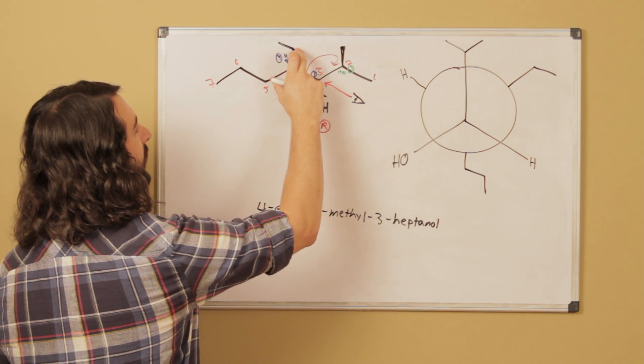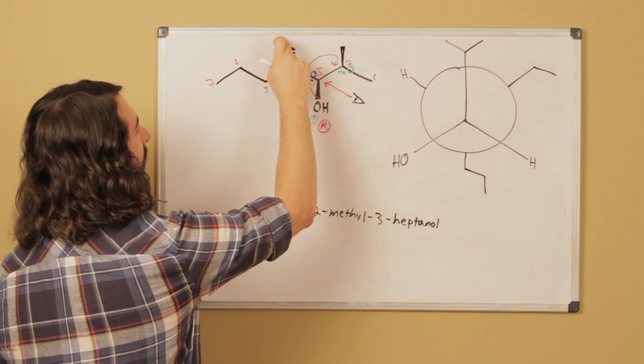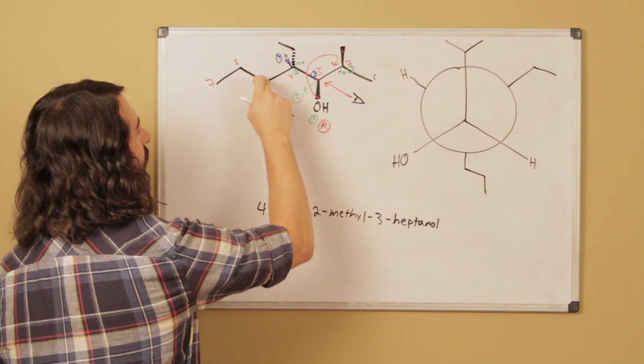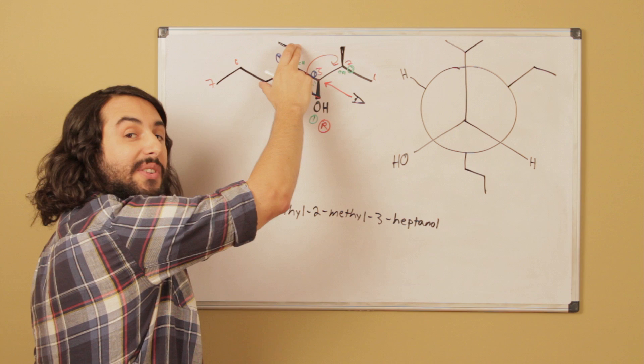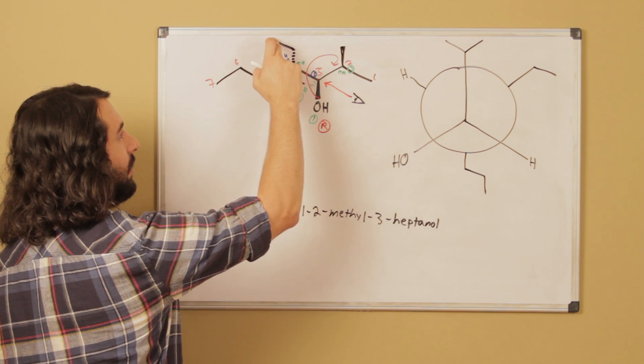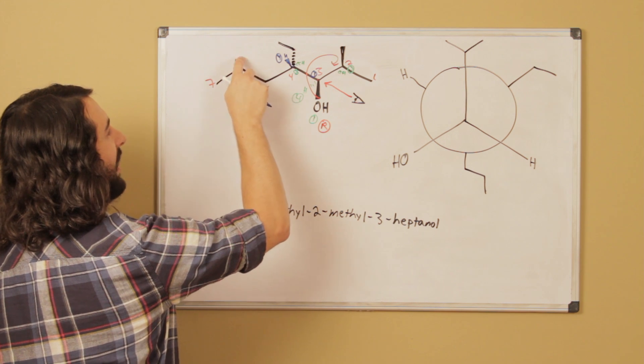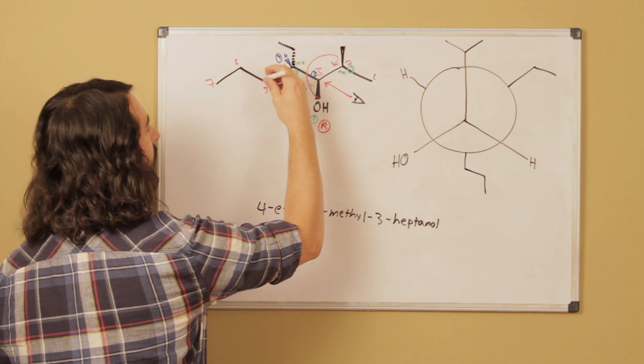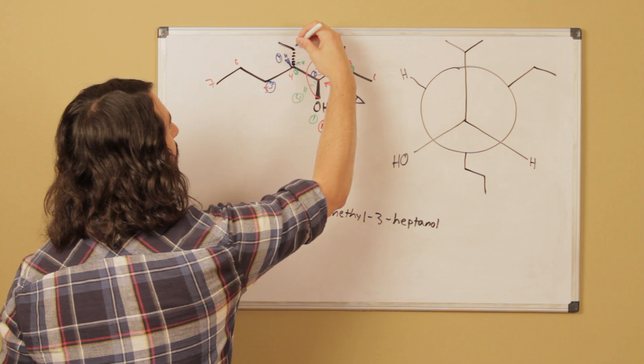Now we look at these two carbons. This is attached to hydrogen, hydrogen, carbon. This is attached to hydrogen, hydrogen, carbon. So again, these two positions tie. Now we're over here. Now this carbon is attached to hydrogen, hydrogen, hydrogen. This one is attached to hydrogen, hydrogen, carbon. So this one actually ends up winning. That's going to be number 3. No, sorry, number 2. And then this one is going to be number 3.